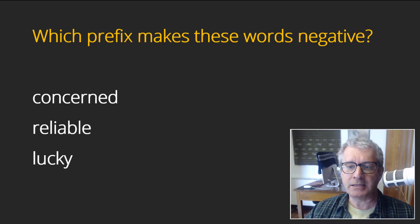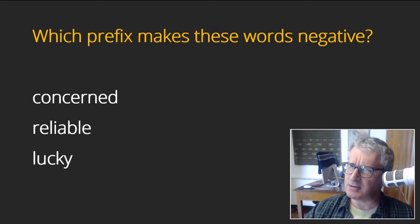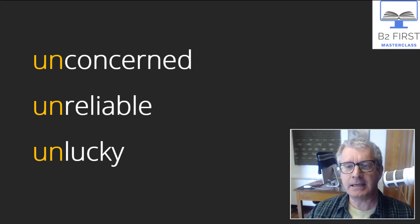Let's do three more, also adjectives. Which prefix makes these words negative? Concerned, reliable, and lucky. Is it 'ir-'? Is it 'im-'? Is it 'in-'? I'm very concerned about the problems we're having. He's a reliable person. I'm very lucky. The opposite is unconcerned, unreliable—somebody you cannot trust is unreliable—and unlucky. That's unlucky you didn't win.